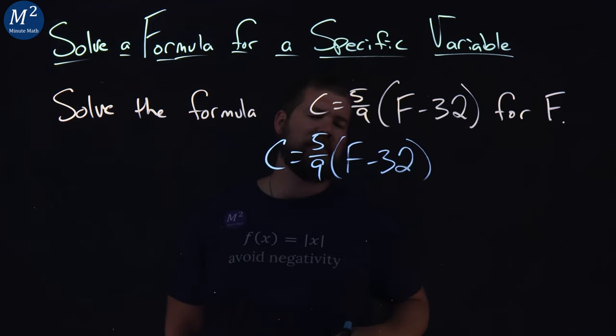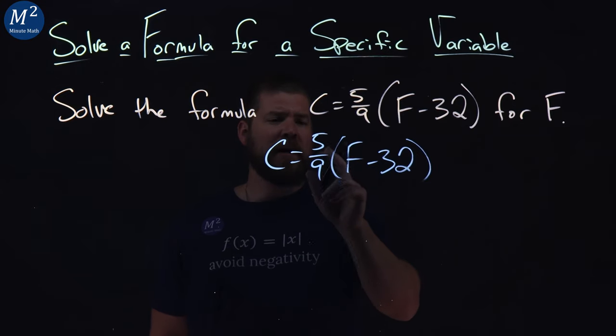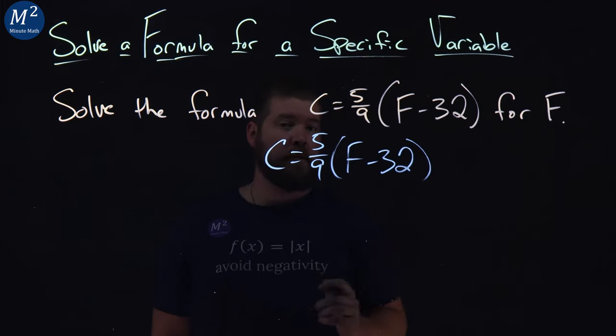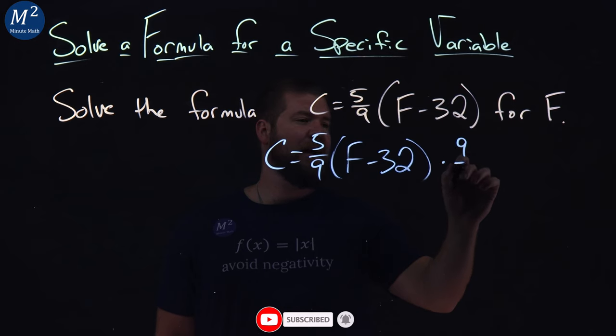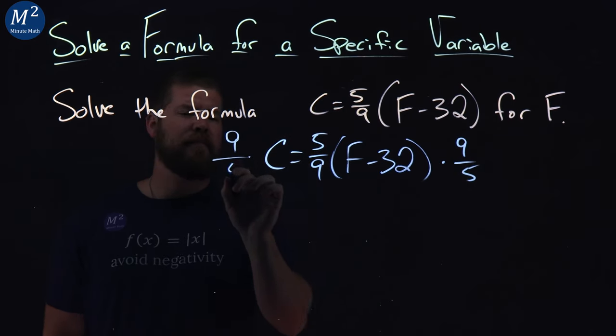So I have C equals 5 ninths times F minus 32. Now we have a fraction 5 ninths multiplied by what's in the parentheses here, F minus 32. Let's go multiply by the flip of this, 9 over 5. But we have to do that to both sides.